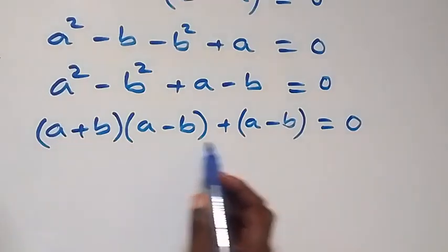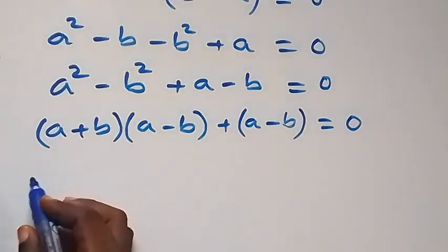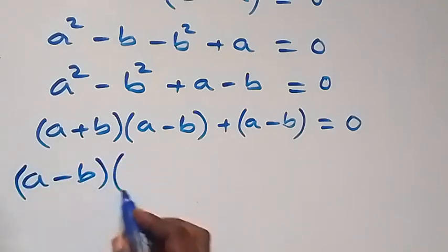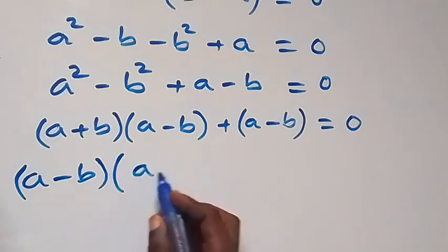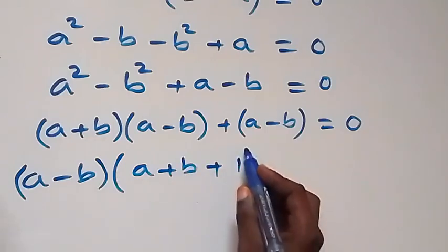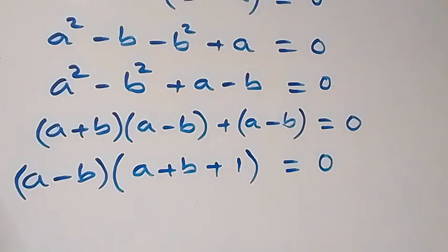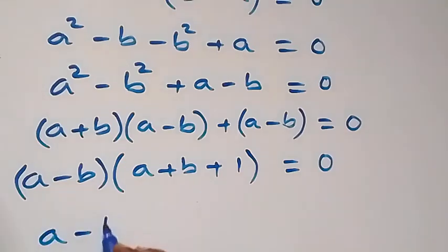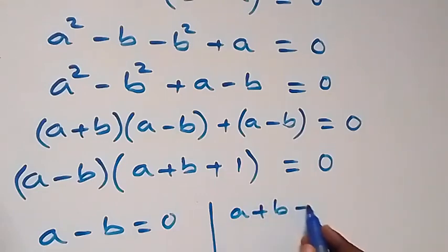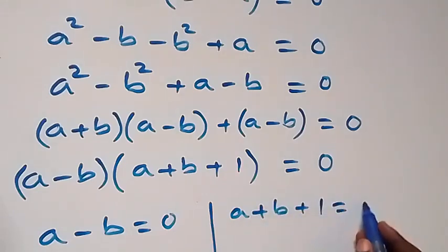Then factoring out (A minus B), we have (A minus B) times (A plus B plus 1), which is equal to 0. So here we have 2 cases: the first one, A minus B equals to 0, and the second one, A plus B plus 1 equals to 0.